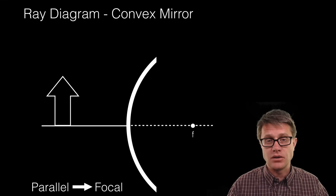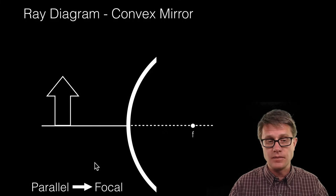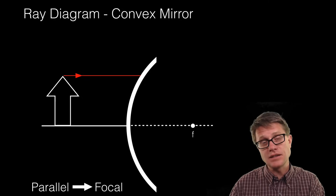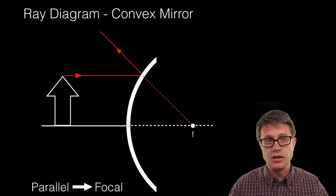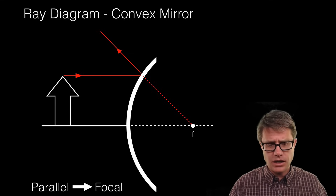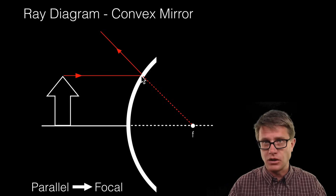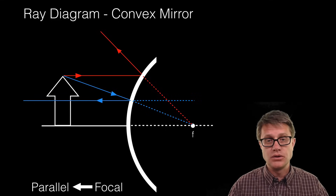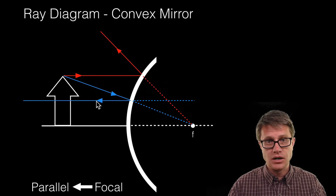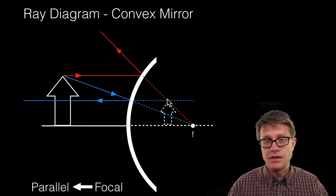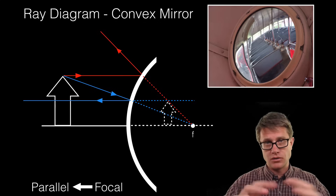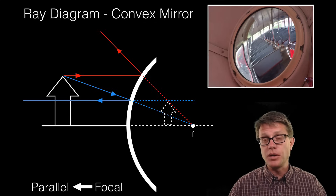Finally, let us go to the convex mirror. The observer is on this side of the mirror. Same rules: draw parallel, but now for the focal I use the focal point on the inside of the mirror. It goes parallel and then the bounce goes through that focal point — checking that angle of incidence equals angle of reflection. Next, go focal to parallel — it goes through the focal and then comes off parallel. There is divergence on the real side, but convergence on the virtual side. The image is upright, virtual, and smaller — reduced in size. Like those convex mirrors on the back of a bus: the people are upright but diminished.